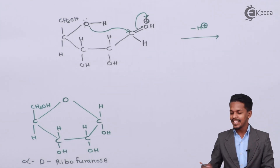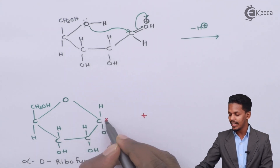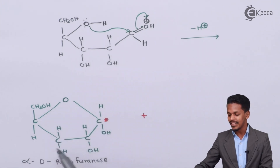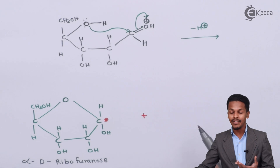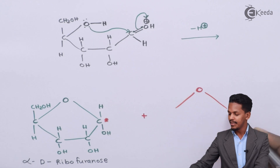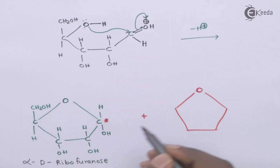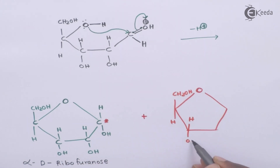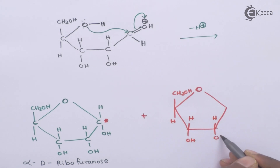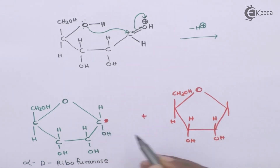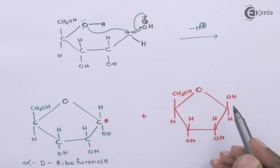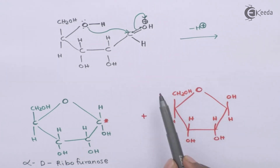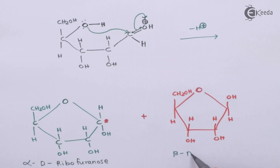The next anomer is very similar, the only difference being a change in the position of the OH group on the anomeric carbon. In this structure, the oxygen is in the middle of the ring, with CH2OH, hydrogen atoms, and OH groups arranged similarly. On the anomeric carbon, if the OH is on the upper side and hydrogen is on the lower side, then OH and CH2OH are both in cis positions, and that is why this anomer is called beta-D-ribofuranose.